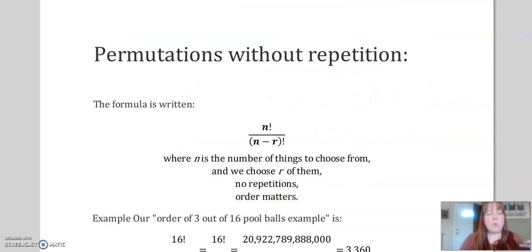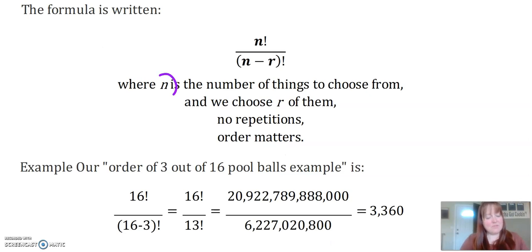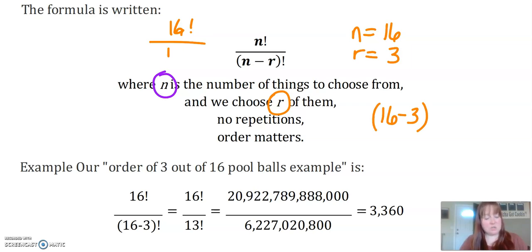So do you see that if I, 13 factorial basically cancels out all the top stuff and then I get that. So our actual notation for this is written this way. Remember n, n is the number of things that we choose from and r is how many of them we choose. So in our pool ball example, we had 16 balls total and we were only choosing three of them. So n would be 16 and r is going to be three. So if we put that into our formula here, this is n factorial. So that would be 16 factorial over n minus r factorial. So n is 16 minus r. So that is 16 minus three, which is 13 over 13 factorial. That's exactly what we just figured out, right?